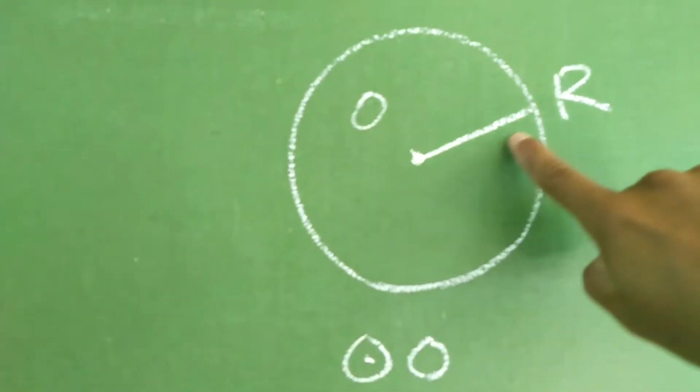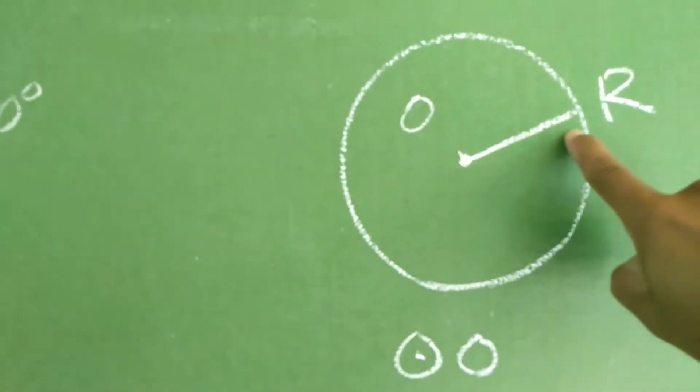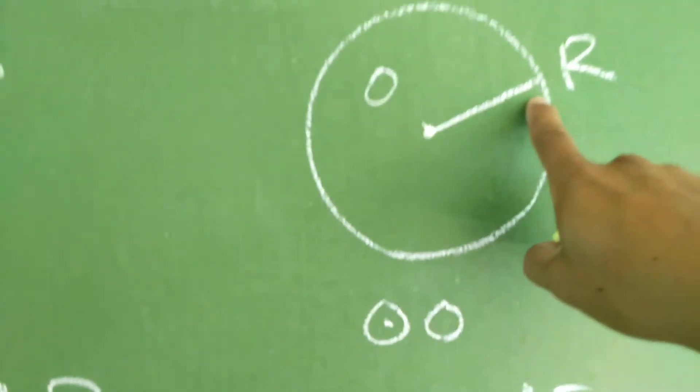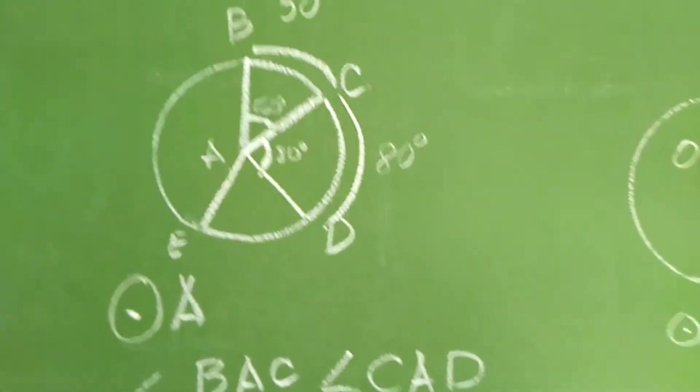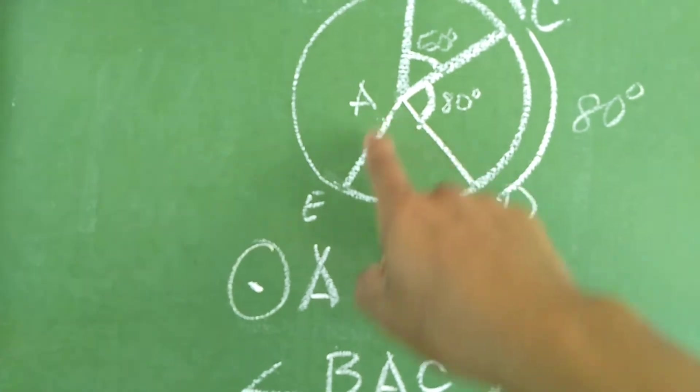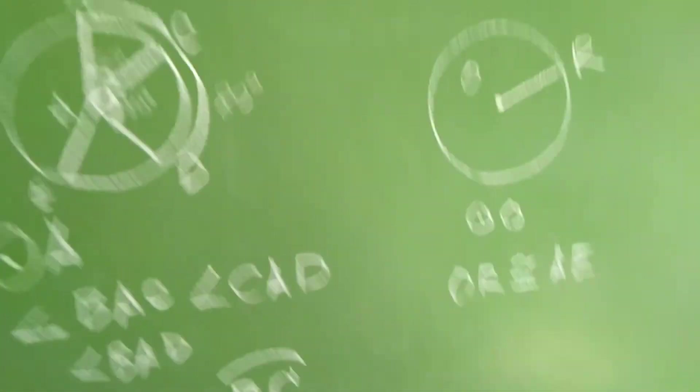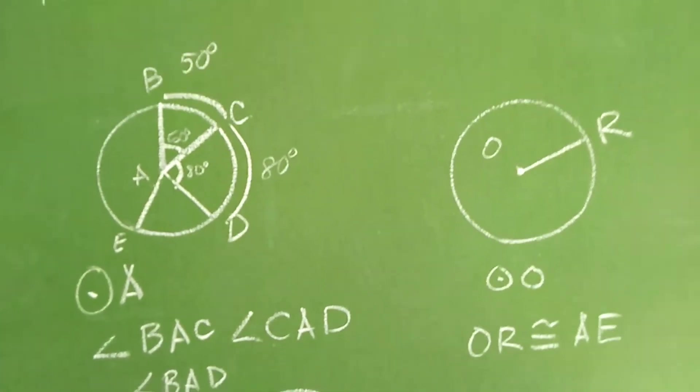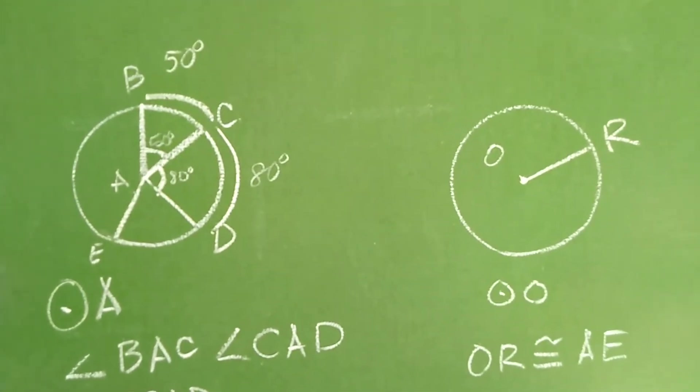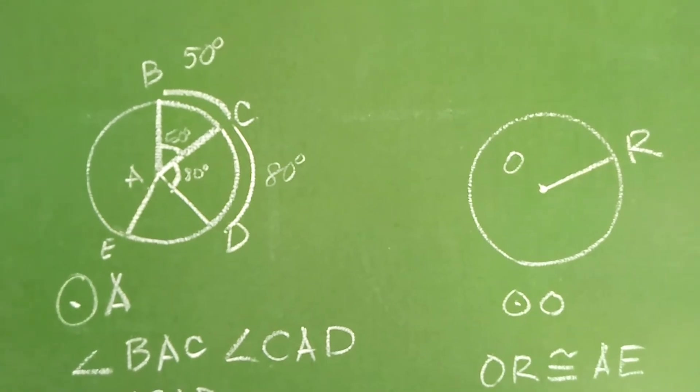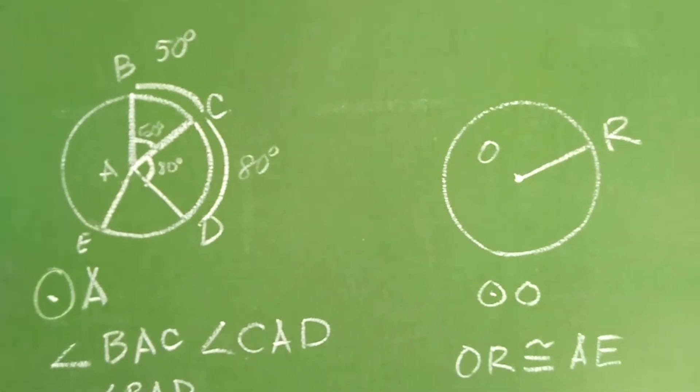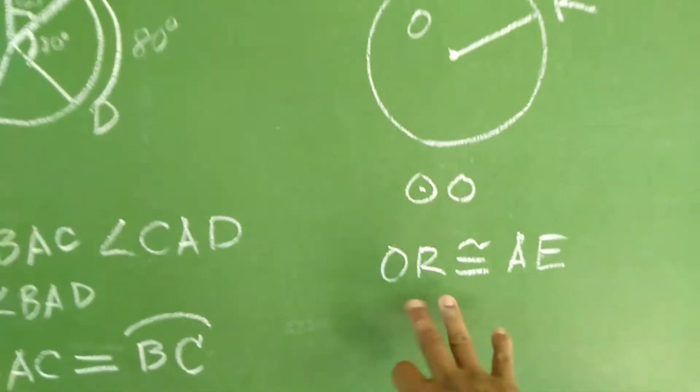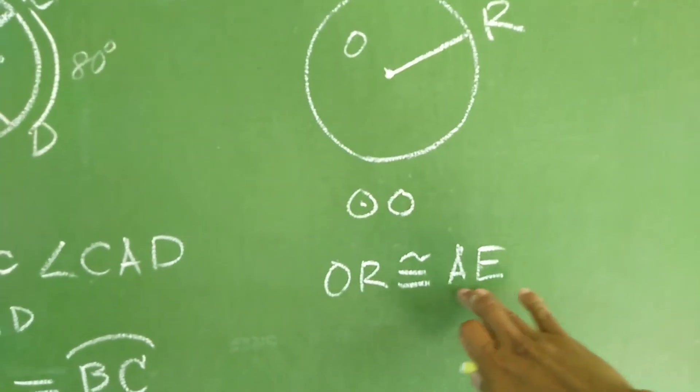Again, I repeat, OR is congruent to AE. Unahin muna natin dito sa circle O. So, si OR daw, yung line daw na ito, anong tawag natin sa line na ito? This is what we called as radius. Okay? OR, ay kaparehas daw siya ni AE. Yun ang sabi ni book. Dito sa drawing natin, medyo hindi hawig, no? Pero yun kunwari ang sinabi ng book natin.